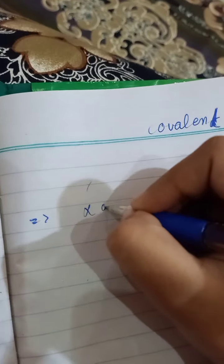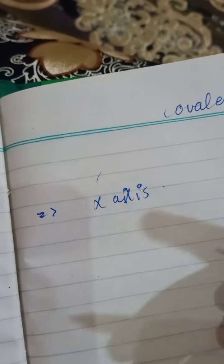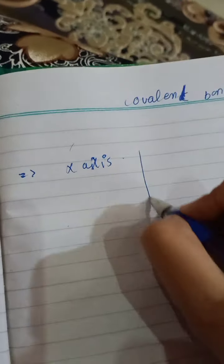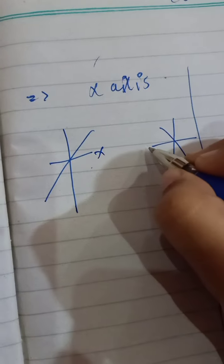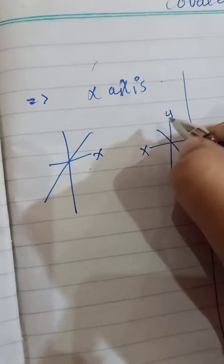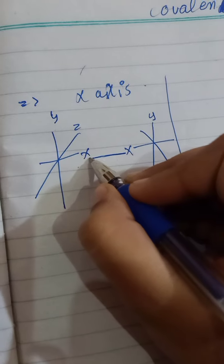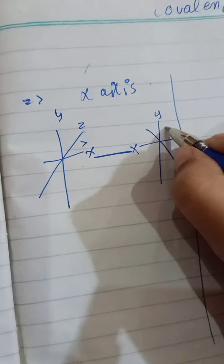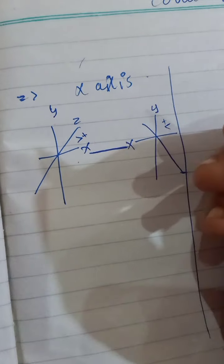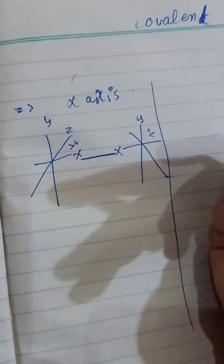Let's talk about the x-axis. For example, an atom has an x-axis, y-axis, and z-axis. Along the x-axis, electrons are shared between the two x-axes. So the first electron and the second electron — they both are having a positive charge. You will ask how they are having a positive charge. When they share the electrons, they will have negative and positive charges.